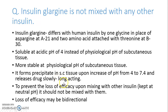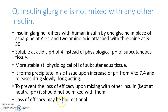If we mix insulin glargine with other insulins — insulin glargine is mostly kept at acidic pH of 4 whereas other insulins are kept at neutral pH — if we mix them beforehand, or mixing occurs in the syringe itself, there will be a change of pH from acidic to alkaline outside the body, and then there will be a loss of efficacy of both types of insulin. To prevent this loss of efficacy, we should not mix insulin glargine with any other insulin.